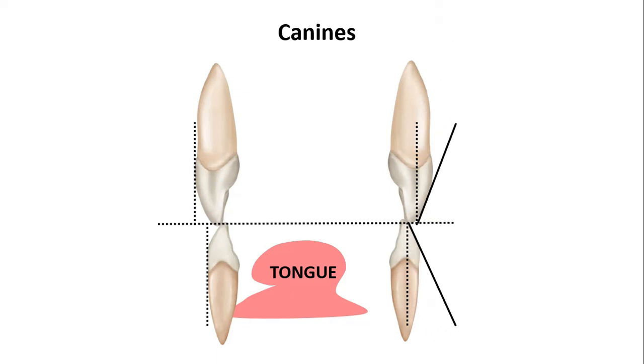Now draw tangent to the labial surface of these canines. The angulation between the perpendicular line and the tangent line is minus 7 degrees for upper canines and minus 11 degrees for lower canines.